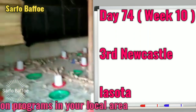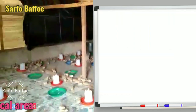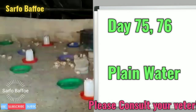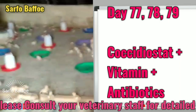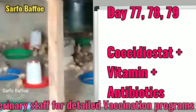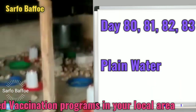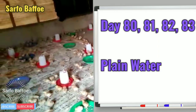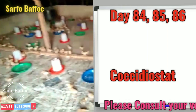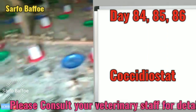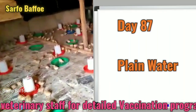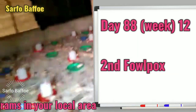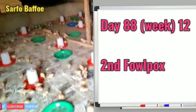Day 74, that is week 10, we give them the third Newcastle La Sota. Day 75 to day 76 we give them plain water. Day 77 to day 79 we give them Cocydial Stat plus vitamins plus antibiotics. Day 80 to day 83 we give them plain water. Day 84 to day 86 we give them Cocydial Stat medicine for coccidiosis. Day 87 we give them plain water. Day 88, week 12, we give them the second fowl pox vaccine.